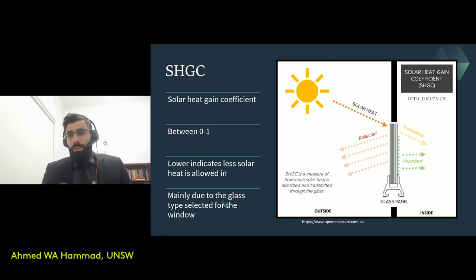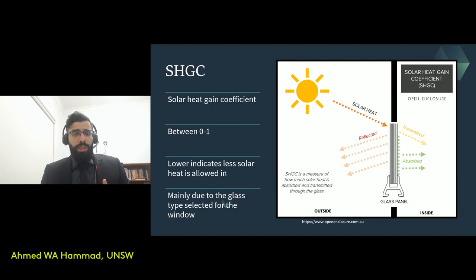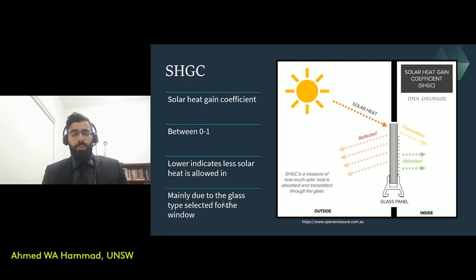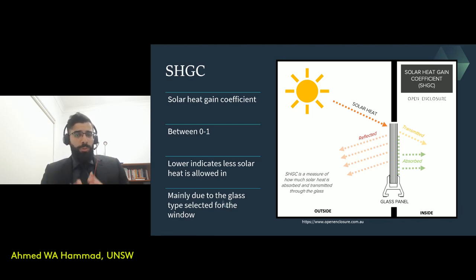In cold climates it's the other way around. So if you've got a solar heat gain coefficient of 1, that implies 100% of solar radiation goes through the window into the building. The measure depends on the full window — the glass and the frame — but it's mostly the glass that contributes to the measure.